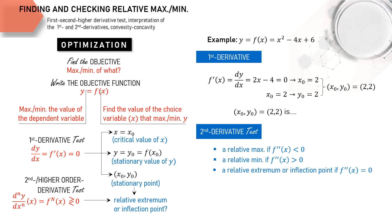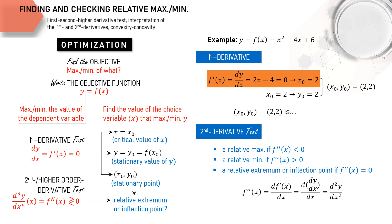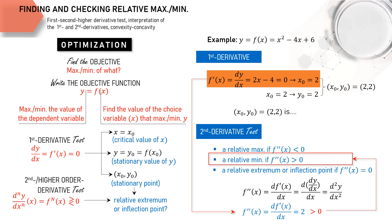The second derivative of our objective function is basically the derivative of the first derivative. It can be expressed using double prime notation or d²y/dx². From our example, with the given first derivative, the second derivative is 2. Since the value of our second derivative is positive for all values of x, it means that the stationary point (2, 2) is a relative minimum.